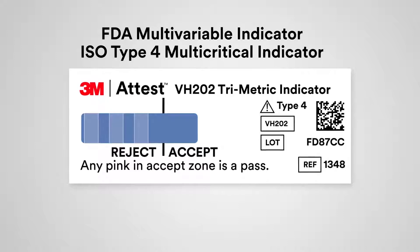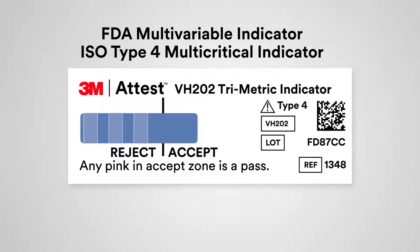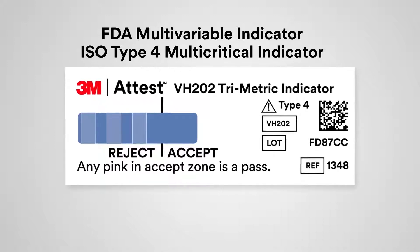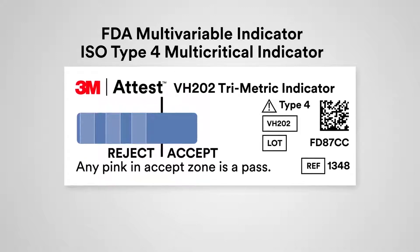The 3M Attest Trimetric is the only chemical indicator to meet both the new FDA multivariable indicator category for chemical sterilization and isotype 4.